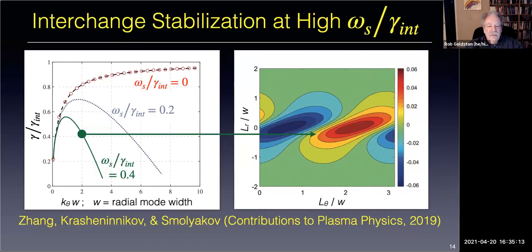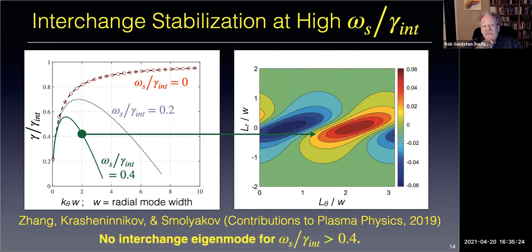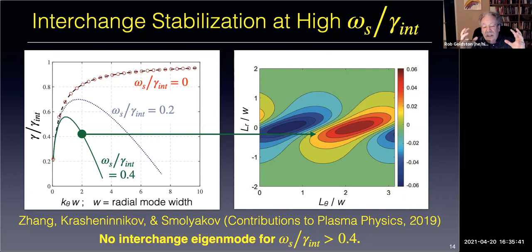Looking at the mode structure in a companion paper, it looks like it's tearing itself apart. After considerable discussion, it turns out they couldn't find an interchange eigenmode for shearing rate over interchange growth rate greater than 0.4. So maybe I should have chosen 0.4 instead of 1, but there seems to be decent theoretical basis for thinking that somewhere around omega-shear over gamma-int of order unity, significant things happen to the interchange mode.